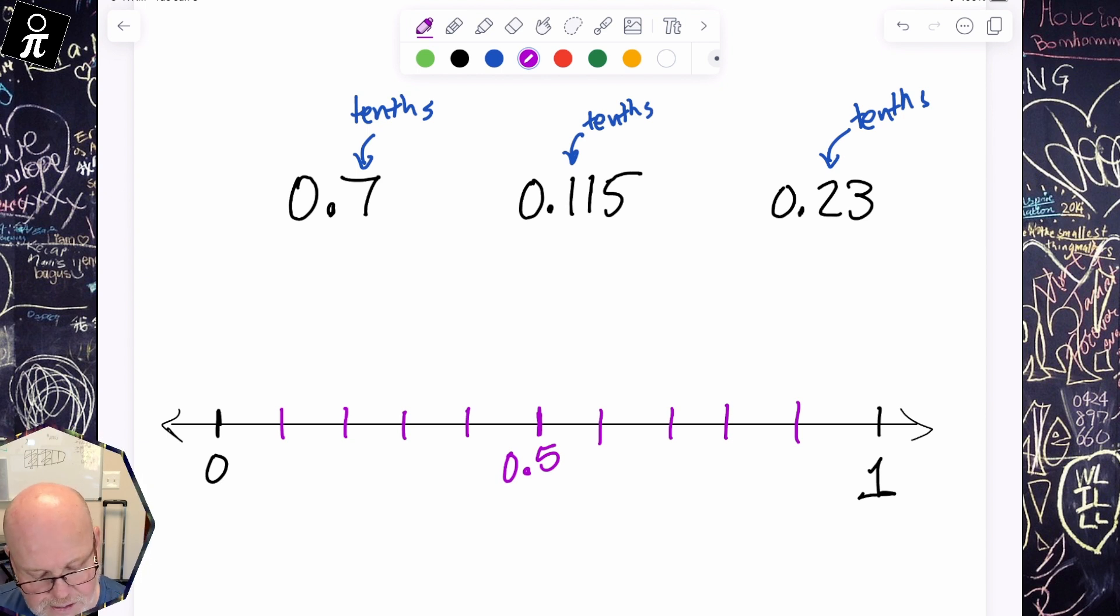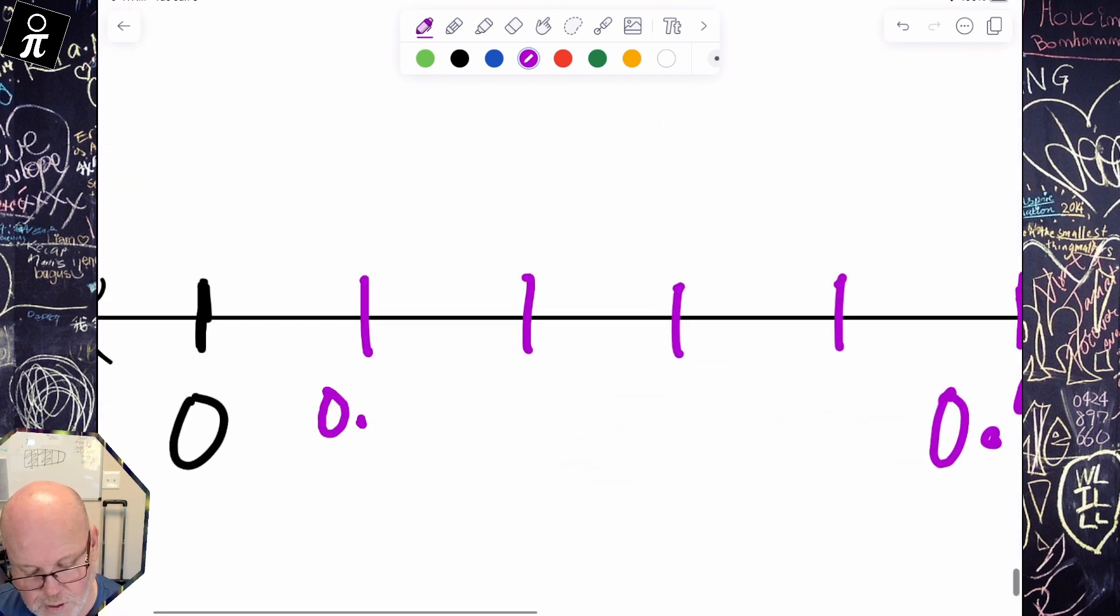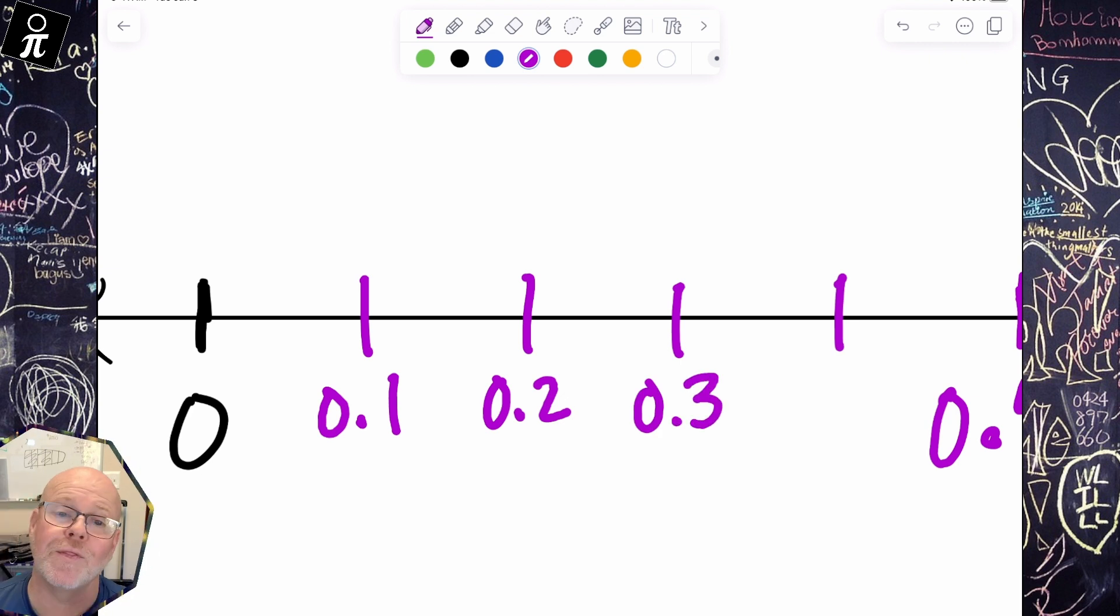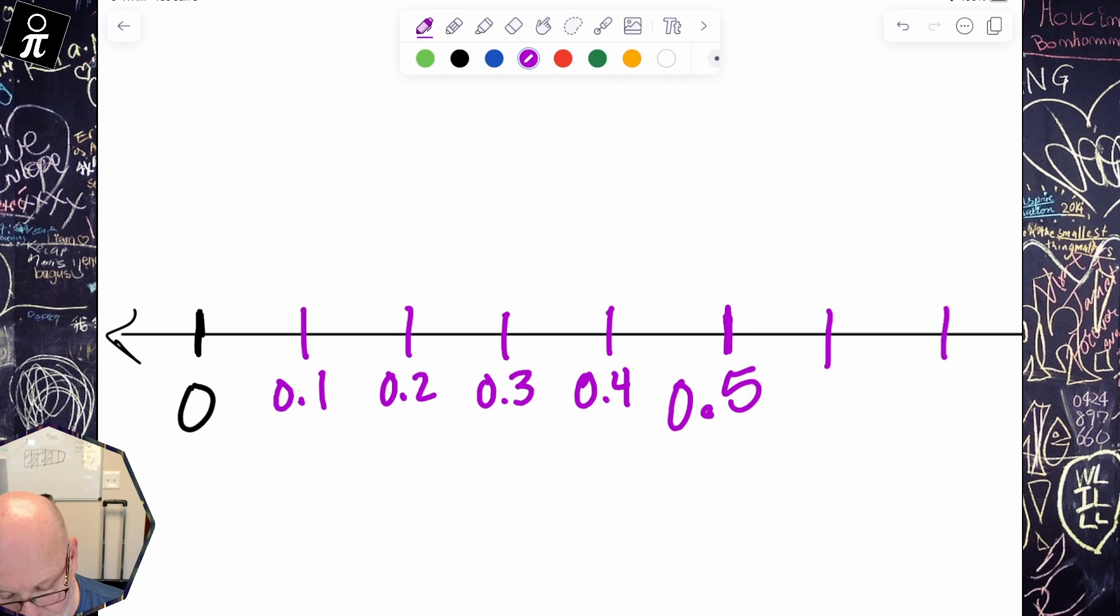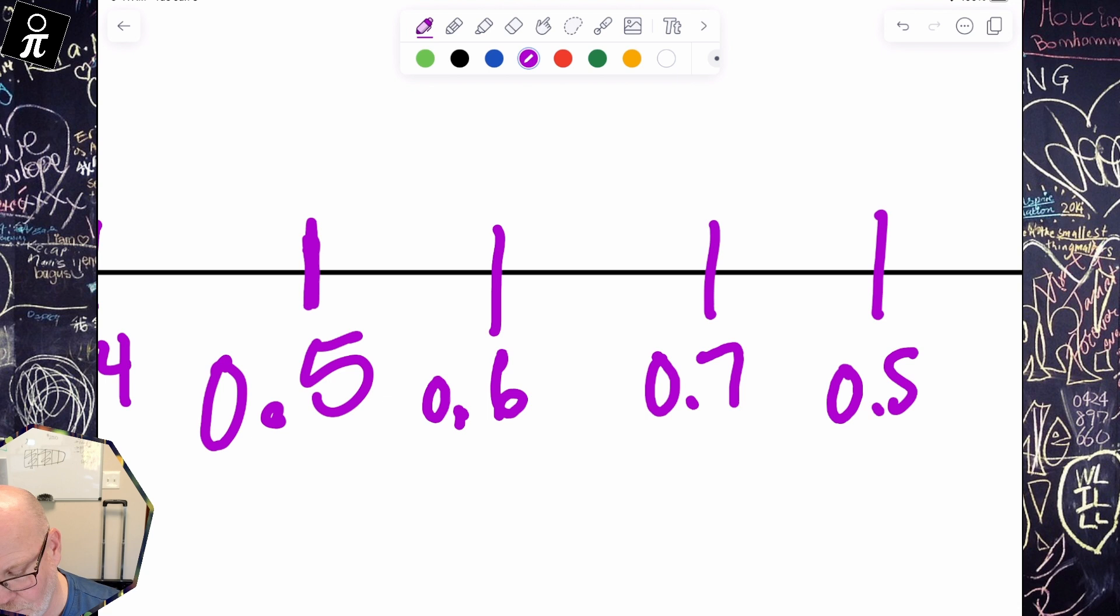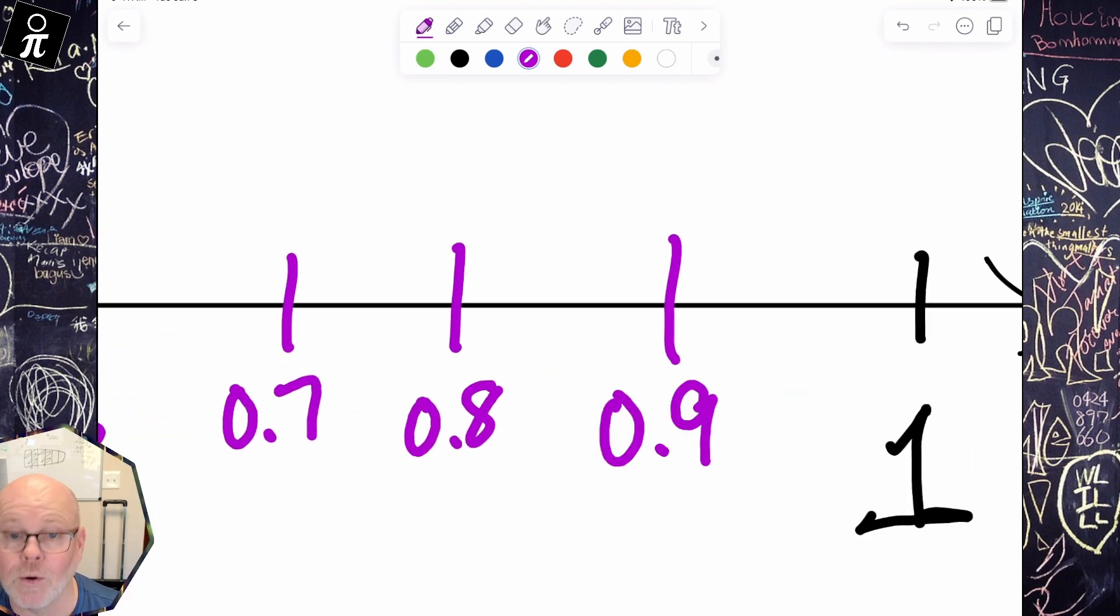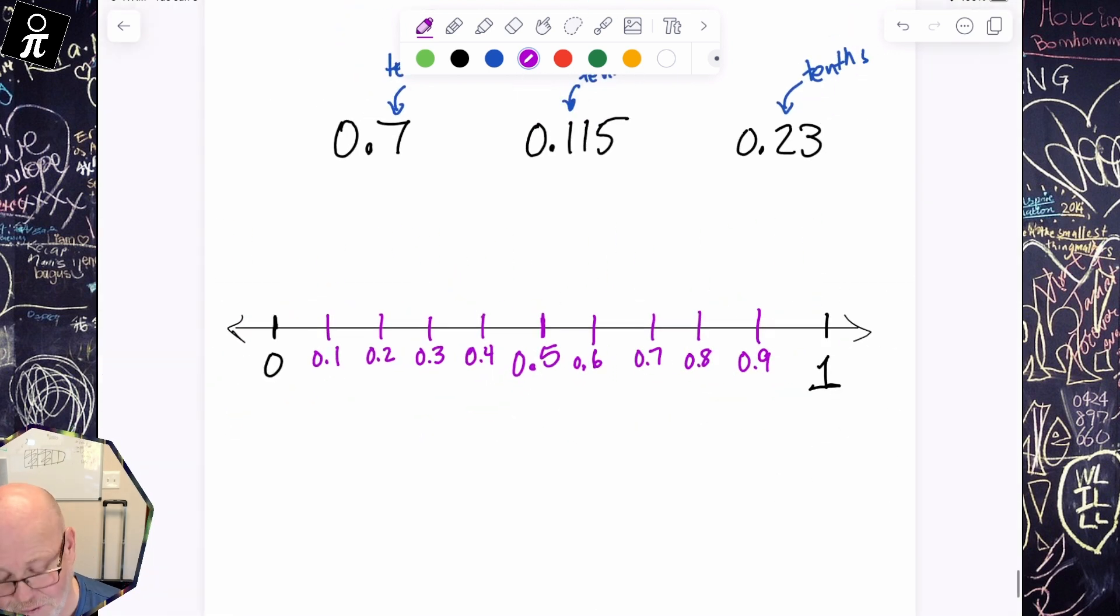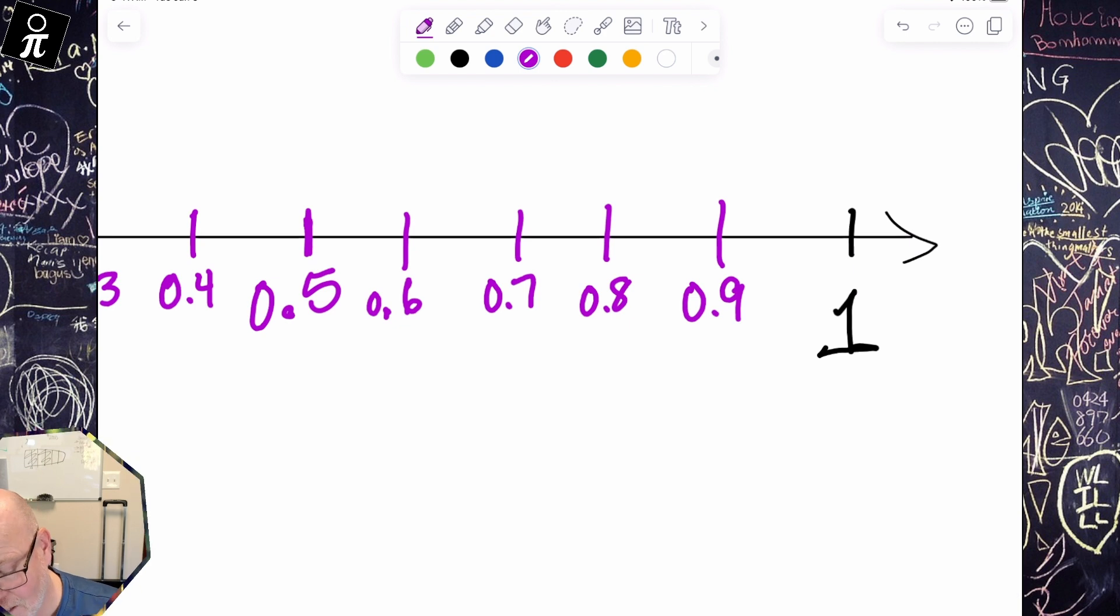And so now I know that these are labeled 0.1, 0.2, or 0 and 3 tenths, and 4 tenths, 5 tenths, 6 tenths, 0.7, 0.8, and 0.9 or 9 tenths. And then of course we have 10 tenths, which would look like this. It would not look like this.